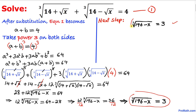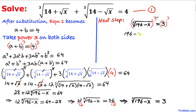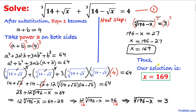Now we take the cube on both sides. The cube and cube root cancel, giving 196 minus x equals 3³, which is 27. Isolating x, we get x equals 196 minus 27, so our solution is x equals 169.